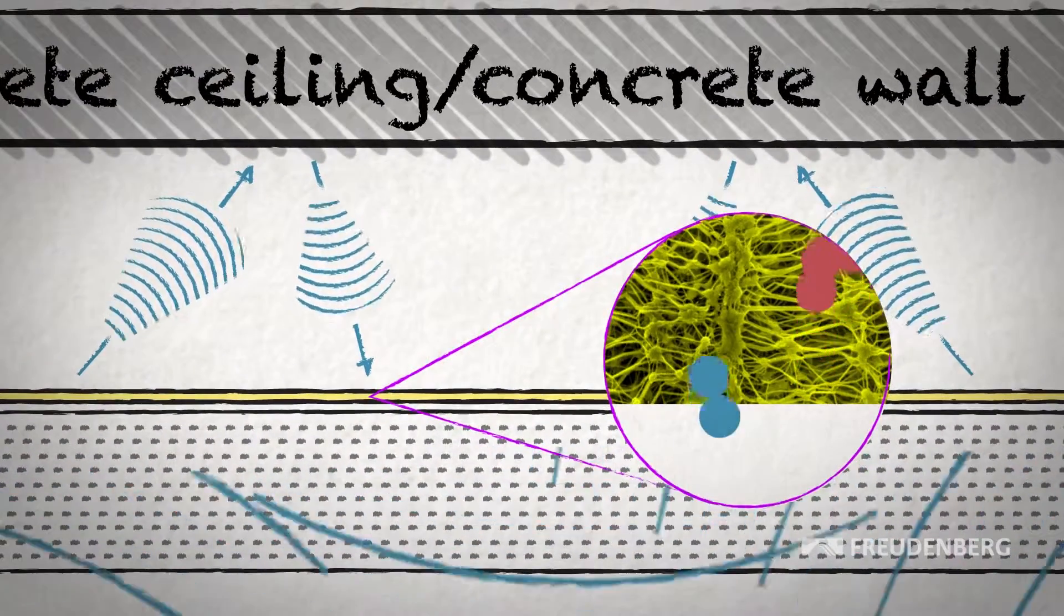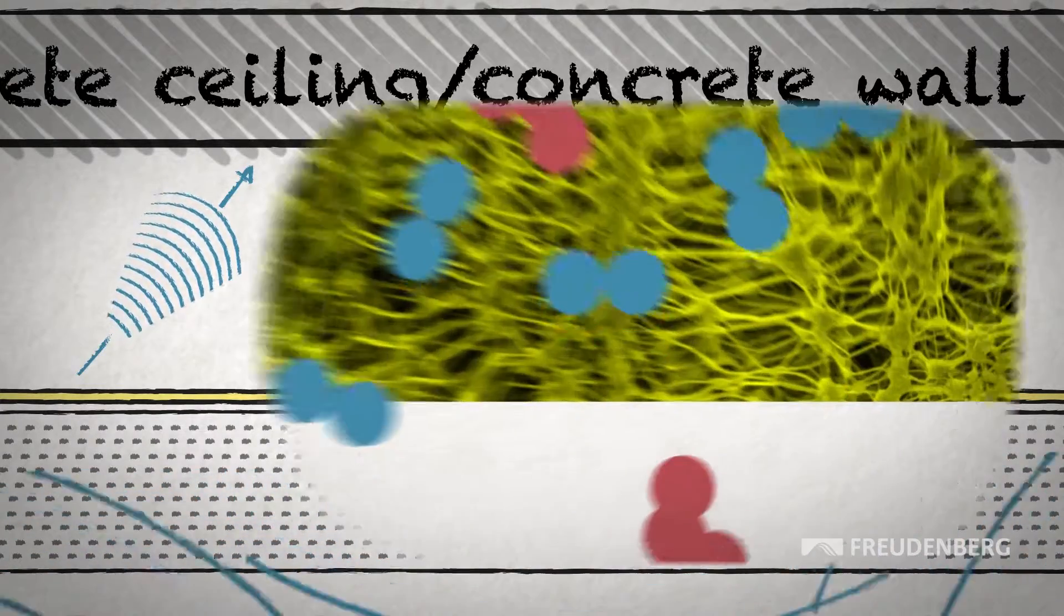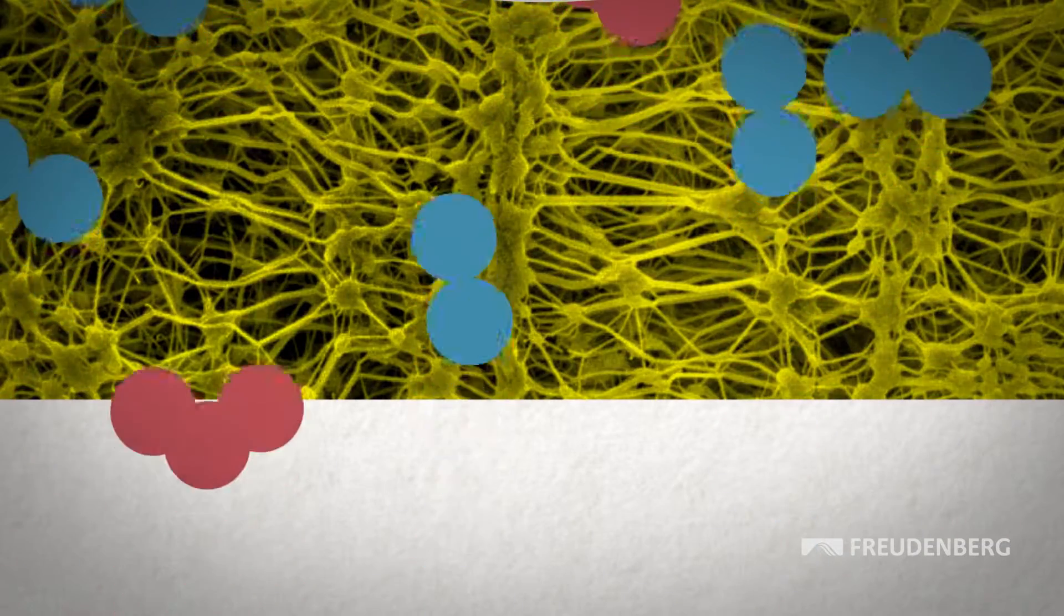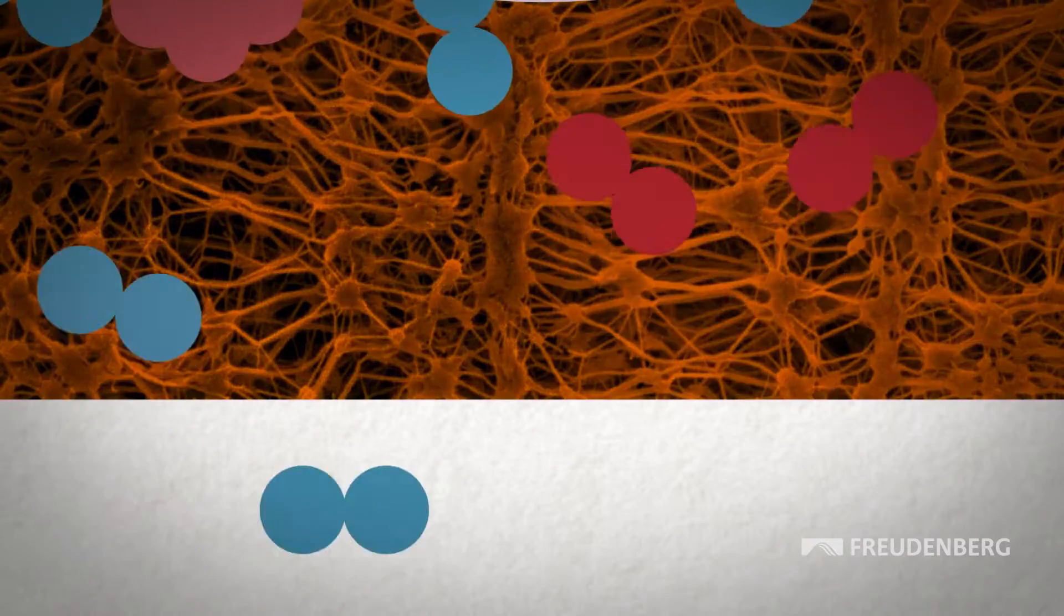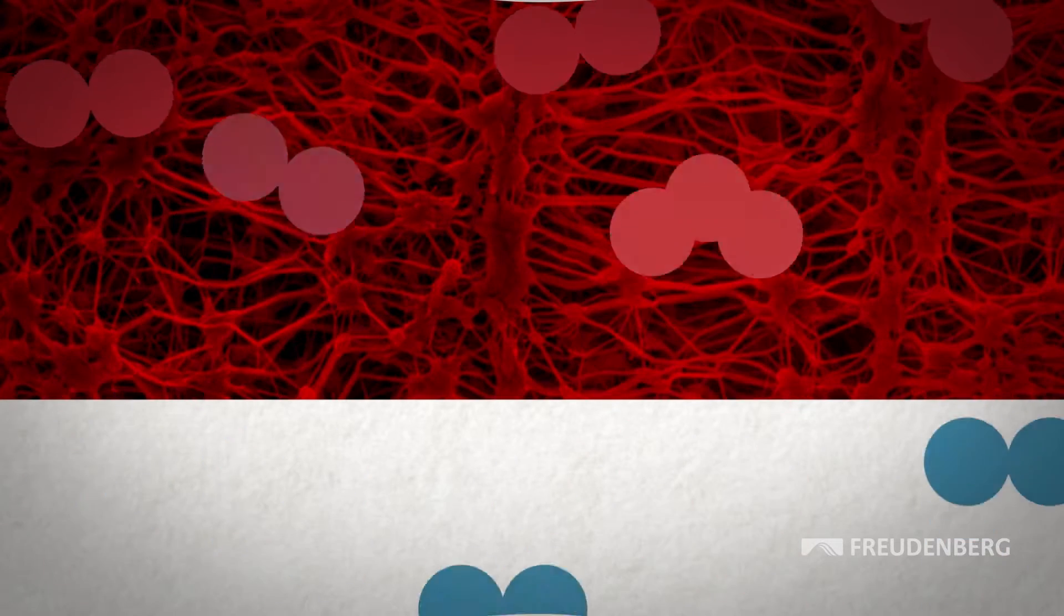Part of the sound slips through the holes and passes through the absorber fabric and is reflected by the concrete wall or ceiling. Now, air molecules that have been caused to vibrate by the noise rub against the fibers of the acoustic non-woven. As a result, their kinetic energy is transformed into heat and the noise is reduced.